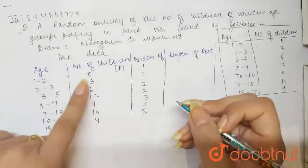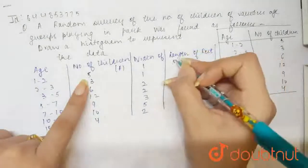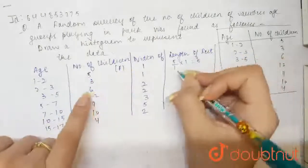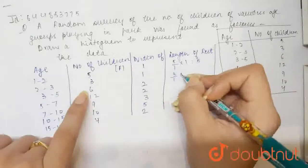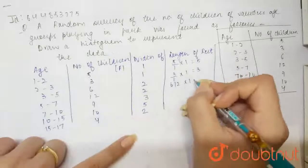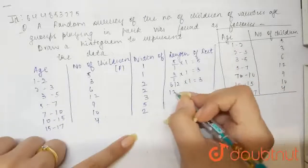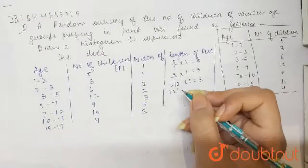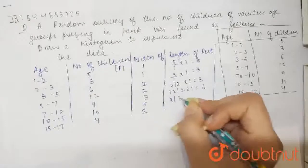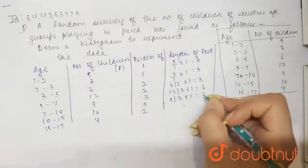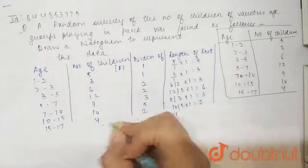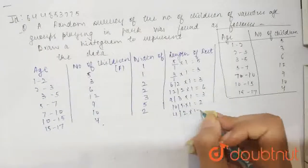What we will do? We will divide 5 by 1 multiplied by 1, this will be 5. 3 divided by 1 multiplied by 1 will be 3. Similarly, 6 divided by 2 multiplied by 1 will be 3. Then 12 divided by 2 multiplied by 1 will be 6. Similarly, 9 divided by 3 into 1 will be 3. Then 10 divided by 5 into 1 will be 2. Lastly, 4 divided by 2 into 1 will be 2.